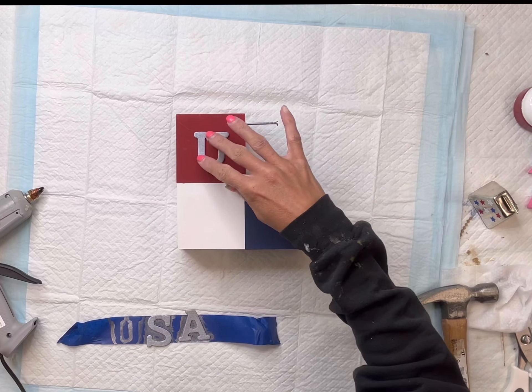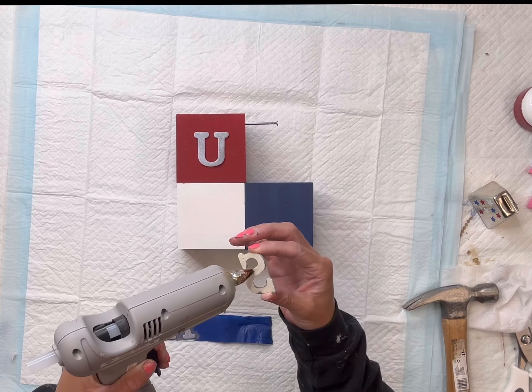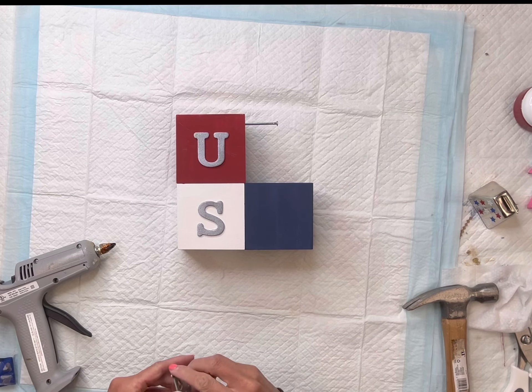I'm going to use some hot glue to glue my letters onto my blocks. Starting with the U at the top, the S, and then the A.